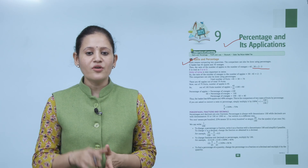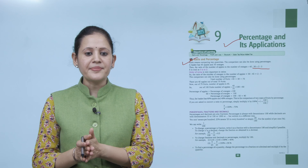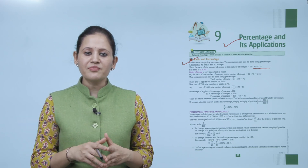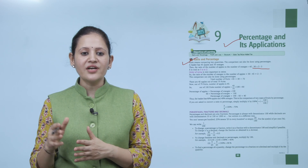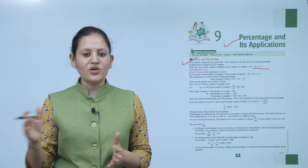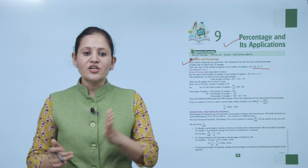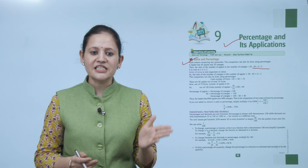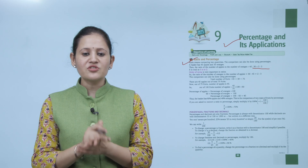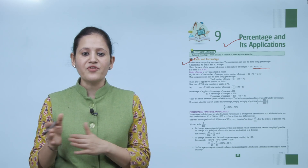This comparison can also be done using percentage. Total number of fruits = 45 + 30 = 75. Out of 75 fruits, apples = 45, so percentage of apples = (45/75) × 100 = 60%. Therefore percentage of oranges = 100 − 60 = 40%. The basket has 60% apples and 40% oranges.